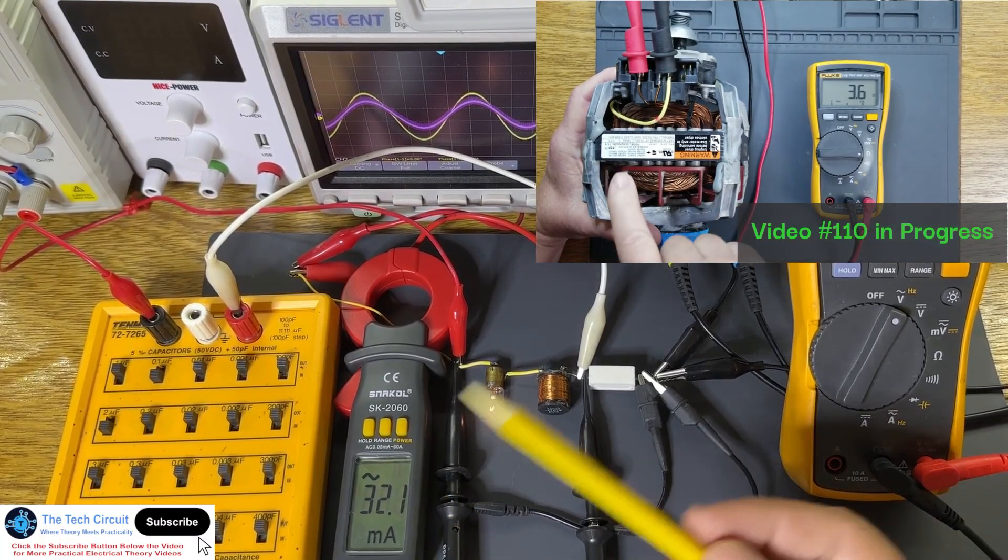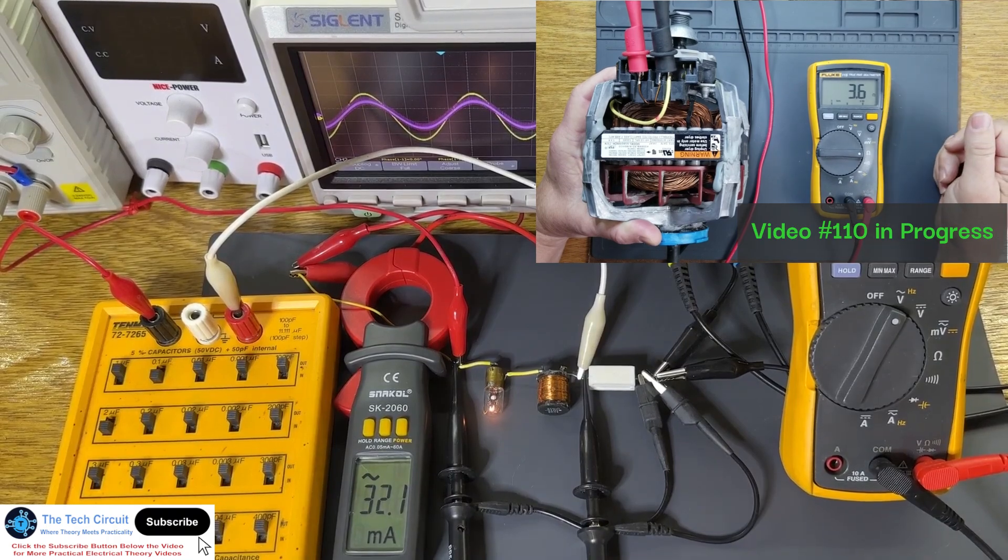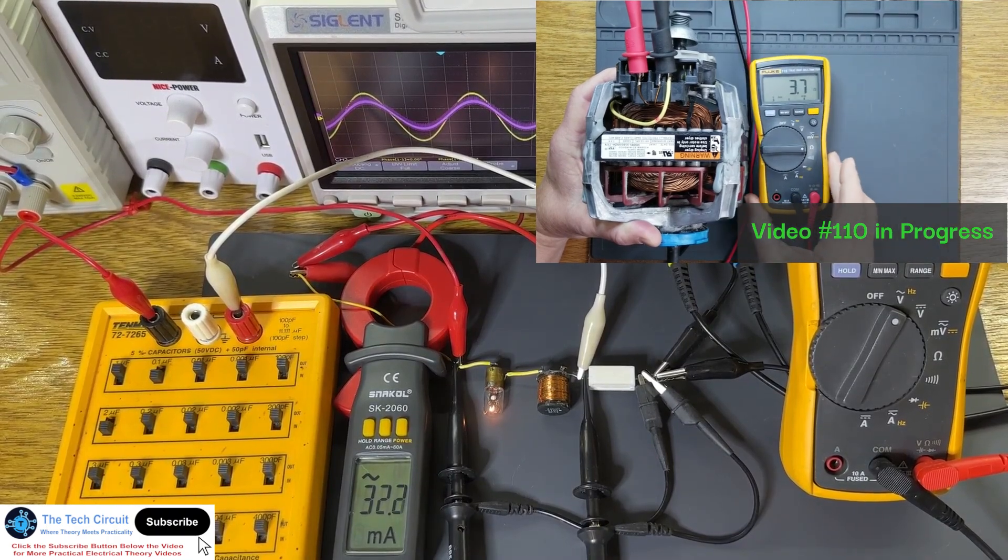By the way, look for video number 110 on this channel where I run a 4-amp Whirlpool dryer motor on 2.5 amps by correcting its power factor.